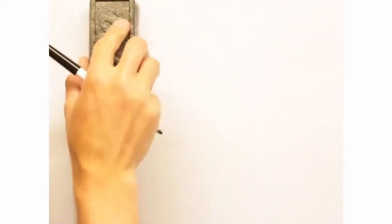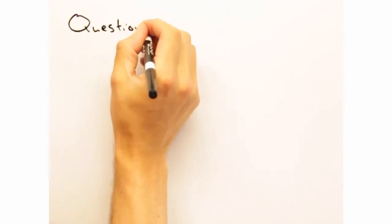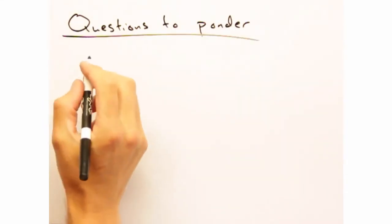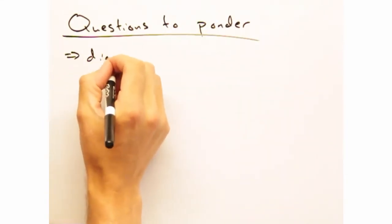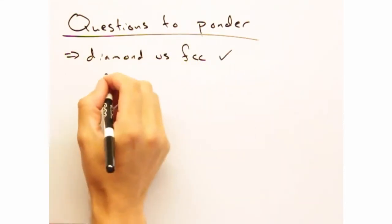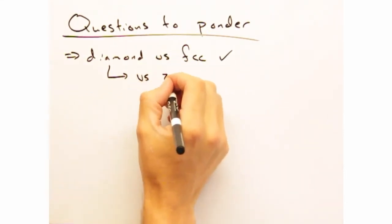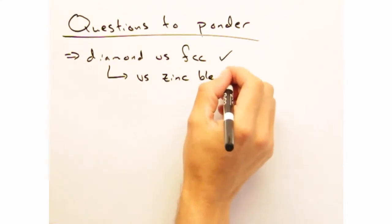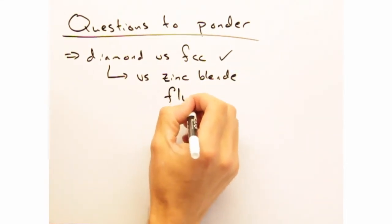Today's questions to ponder are designed to give you some practice comparing different types of structures. For instance, we compared the diamond and FCC structures. It'd be a good idea to look at how diamond is connected to the zinc blend and fluoride structures. I'd suggest you use slices to help you in your comparison.